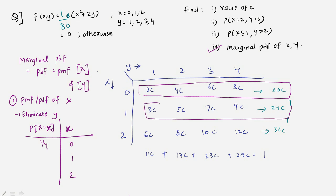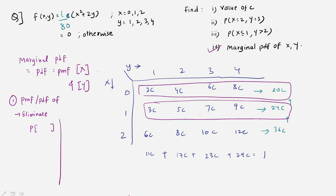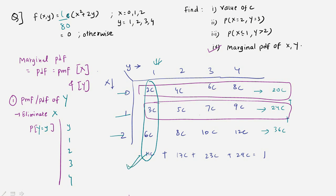For x=2, the marginal probability is 36c = 36/80. Similarly, for the marginal PDF of Y, eliminate x by summing over all x values. When y=1, the vertical strip sums to 11c = 11/80. For y=2: 17c = 17/80; y=3: 23c = 23/80; and y=4: 29c = 29/80.